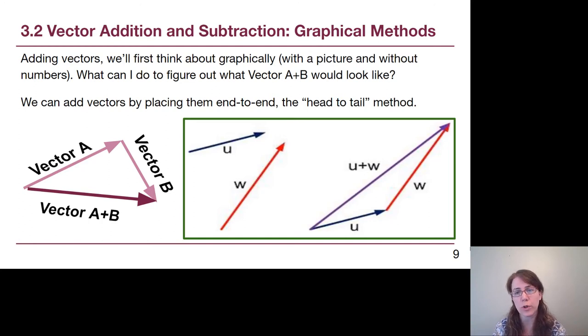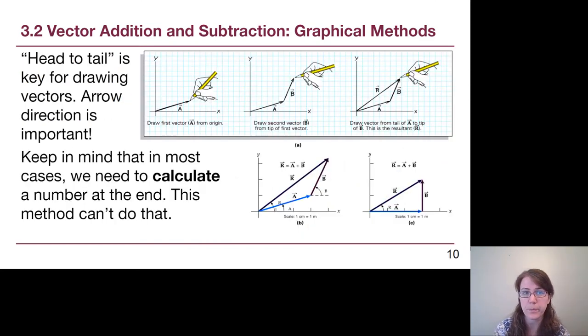We will see this over and over, but we do want to recognize this head to tail method. And the arrow directions are extremely, extremely important for us to understand. So the head to tail method is really key for drawing out vectors. And we always want to draw arrows if we are drawing vectors, because that's what makes them special. Vectors have direction, and that direction matters.